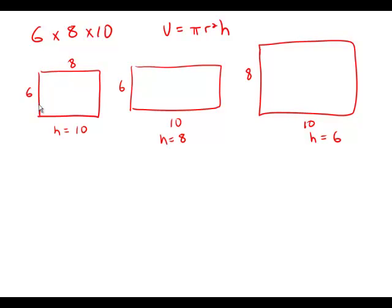The inside dimensions of a rectangular wooden box are 6 inches by 8 inches by 10 inches. A cylindrical canister is to be placed inside the box so it stands upright when the closed box rests on one of its six faces. Of all such canisters that could be used, what is the radius in inches of the one that has the maximum volume?